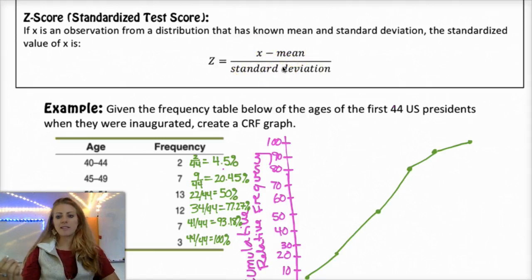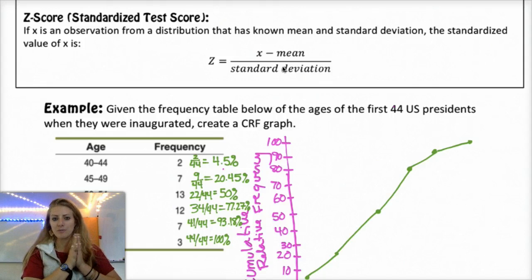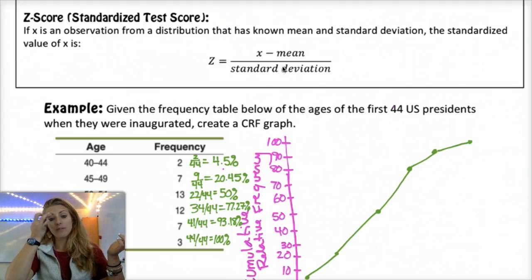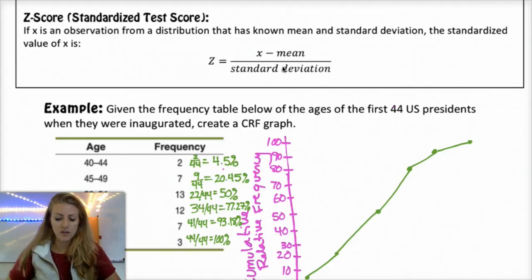It's basically, it takes a value and it subtracts the mean from it. So it finds the distance between that and the mean and then divides by the standard deviation. So it gives you a reference point to compare that to other observations, maybe from a different data set that you want to compare and contrast.